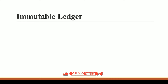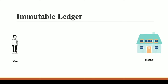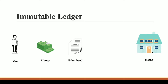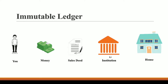Let's say this is you, and you want to buy a house. In order to buy this house you require money, and you need to sign a contract with the party from whom you are buying it. This house belongs to party B, and you want to buy it from party B, so you need to sign a contract — a sales deed — and present it to the government.